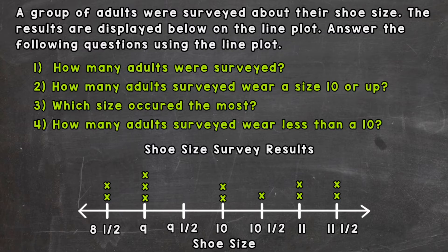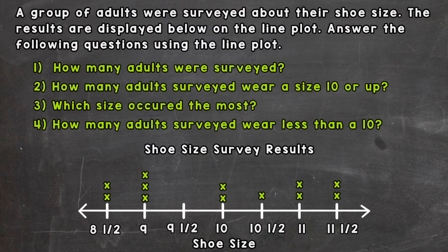We have a situation at the top of your screen that the line plot at the bottom of your screen represents, and we're going to go through four questions to help us interpret that line plot. A group of adults were surveyed about their shoe size, and the results are displayed below on the line plot. Down here at the bottom of your screen, the title is 'Shoe Size Survey Results,' with a label showing each number represents a shoe size.